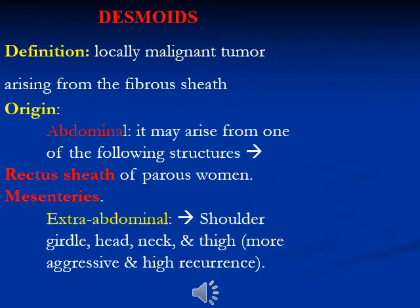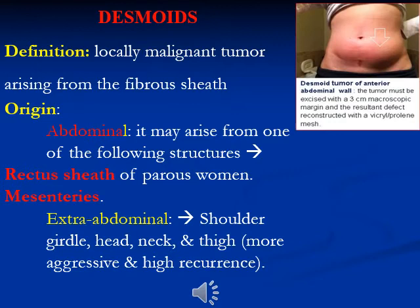Desmoid tumors are locally malignant tumors that arise from the fibrous sheath. They may originate from abdominal sites or extra-abdominal sites, arising from structures such as the rectus sheaths, fibrous tissue in women, or mesenteries.